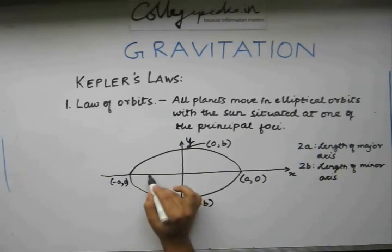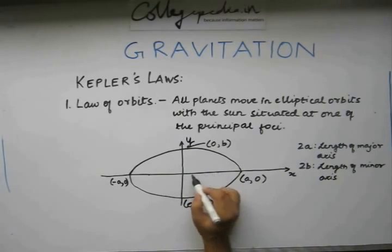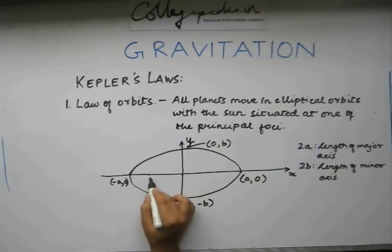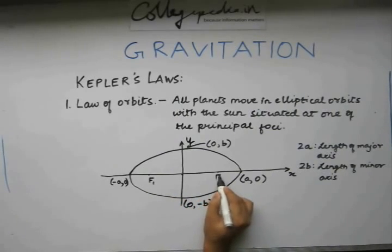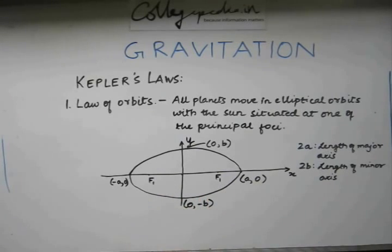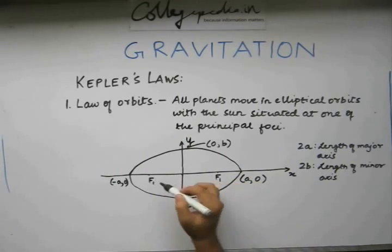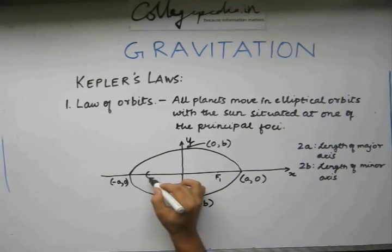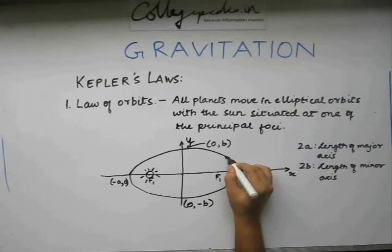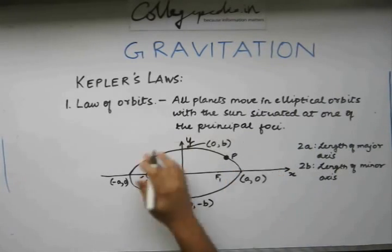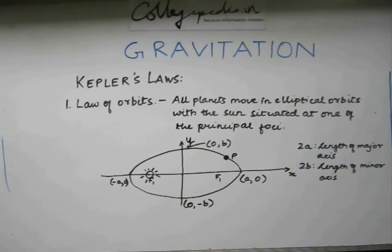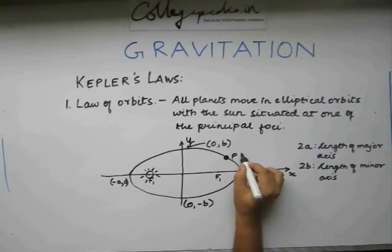We have two points here situated at some distance from the origin. These points are known as the foci of the ellipse. Each point being one of the principal focus of this ellipse. Now, according to this law of orbits, sun must be at either of these principal foci. So say the sun is here. Say our planet is somewhere here, denoted by p. At any point of time, say at time t, say this planet is at a position x, y.